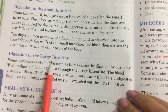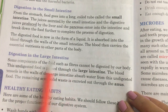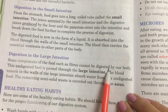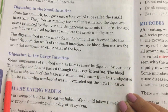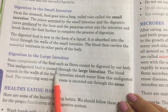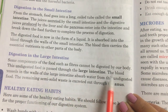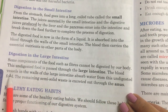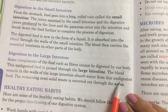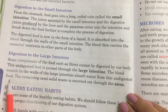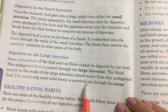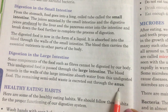Now, digestion in the large intestine. Some components of the food such as fibers cannot be digested by our body. This undigested food is passed through the large intestine. The blood vessels in the walls of the large intestine absorb water from this undigested food. The remaining semi-solid waste is excreted out through the anus.